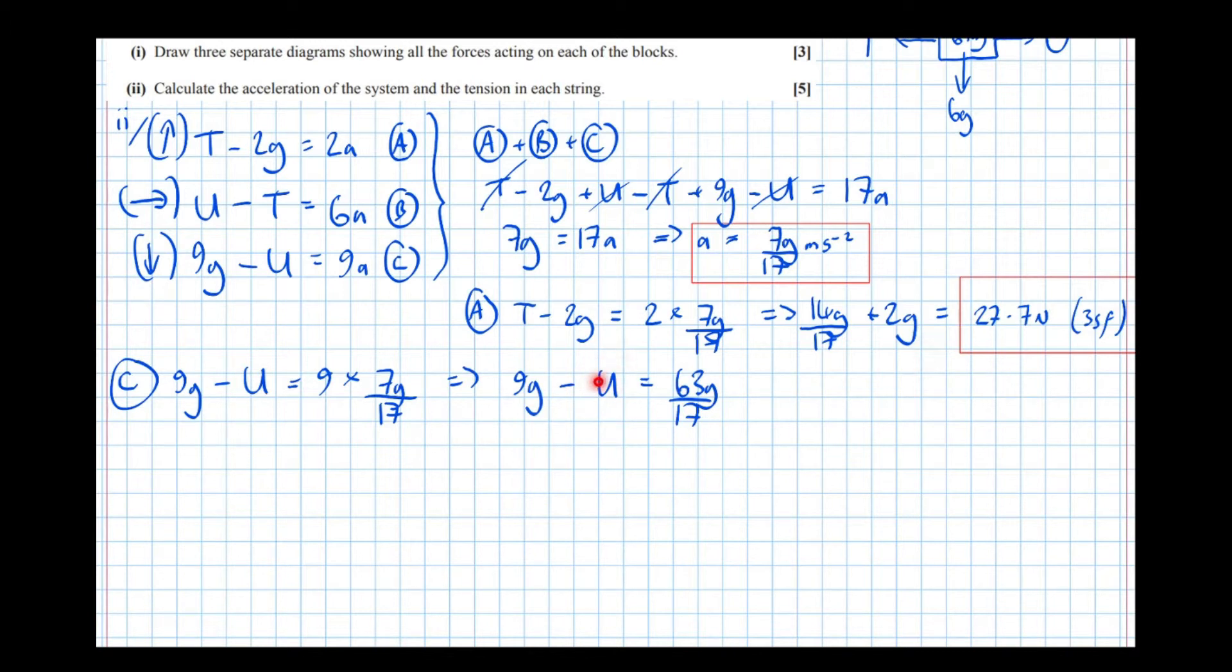Now we take u here, add it to the other side, take 63g over 17 to the other side. We get 9g take 63g over 17 equals u, which is equal to, and let's put in the calculator.